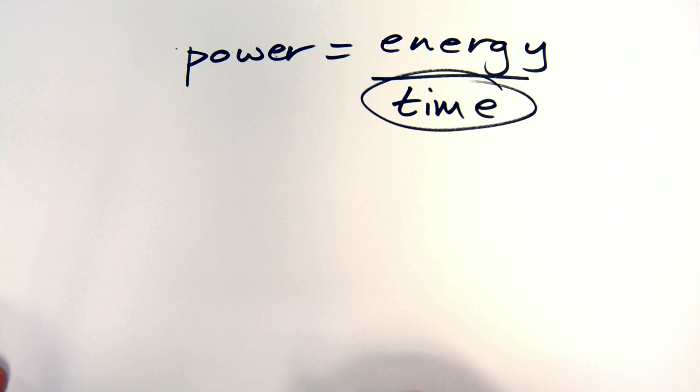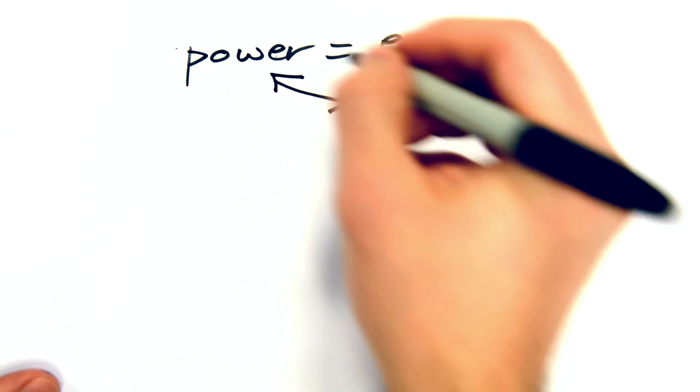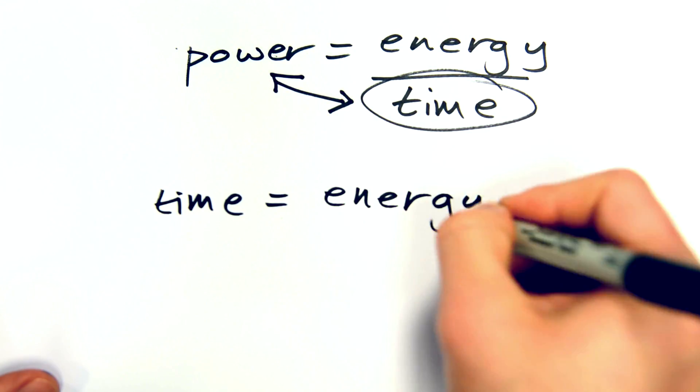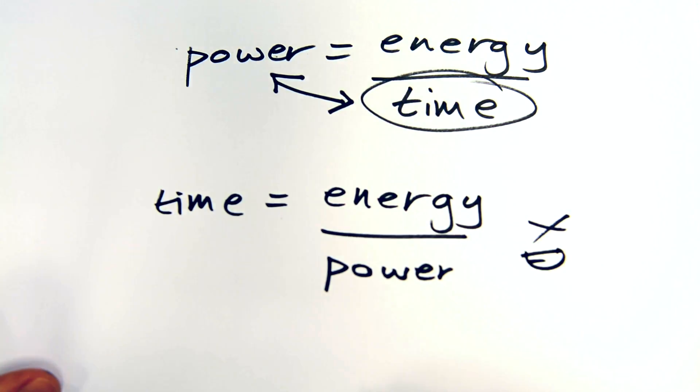What about if we need to rearrange to find time instead? Well, the proper way is to multiply the whole equation by time, then divide the whole equation by power. But the quick way with this type of three-variable equation is just to swap the variable on the left with the variable we're dividing by on the right-hand side. It's cheeky, but it saves time.